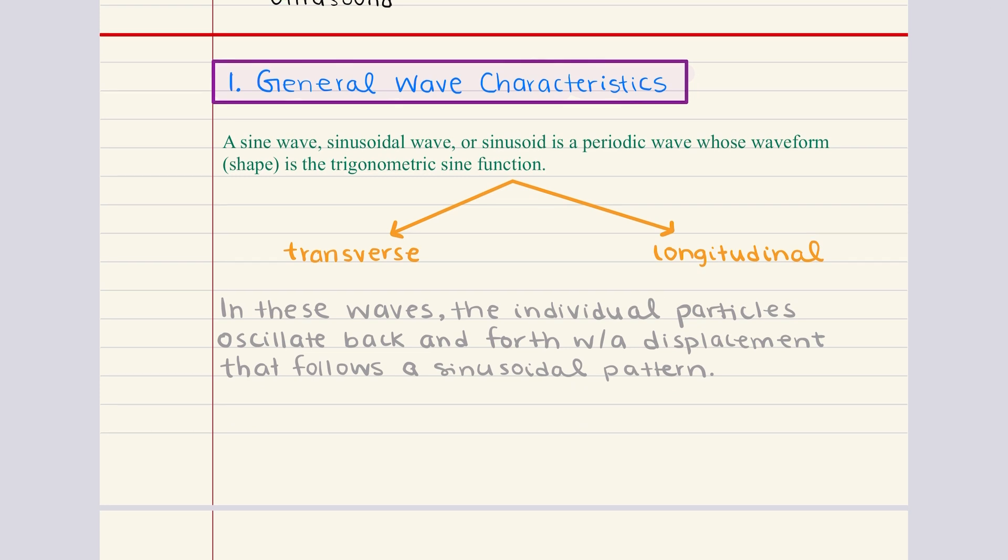Let's begin with discussing sinusoidal waves. This is a type of periodic wave that follows the shape of a sine curve. The term sinusoidal refers to the smooth repetitive oscillation pattern that mirrors the mathematical sine function. These waves are fundamental in physics because they describe many natural phenomena from the movement of sound waves to the oscillations of light and water waves.